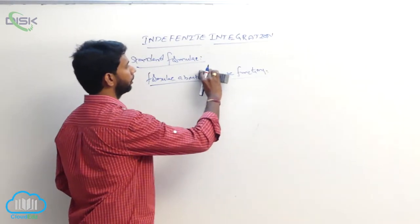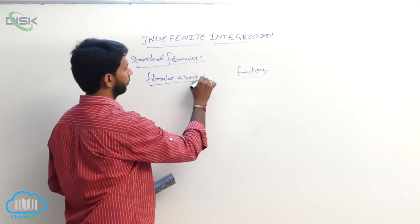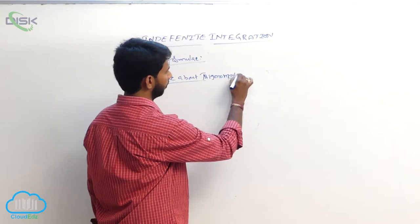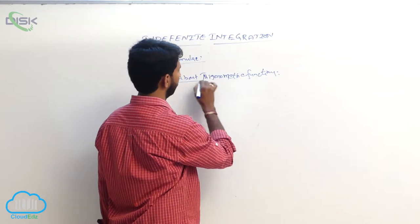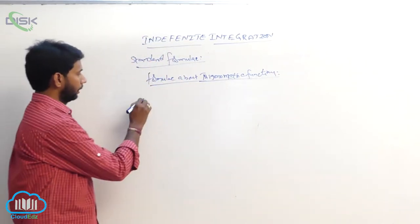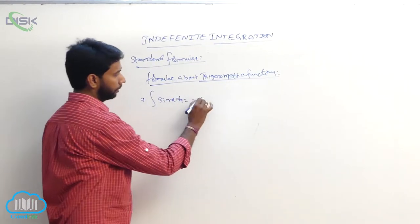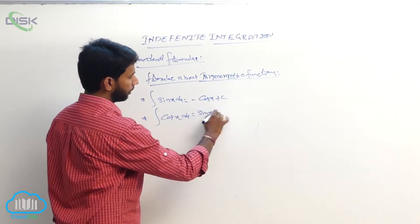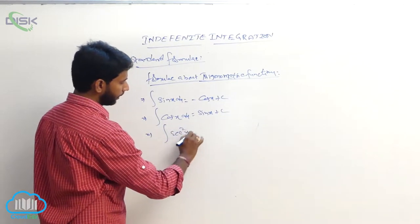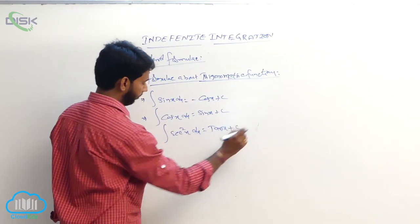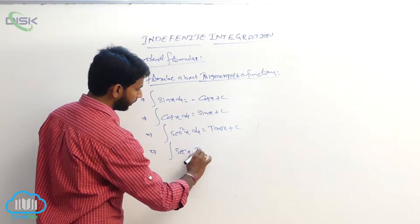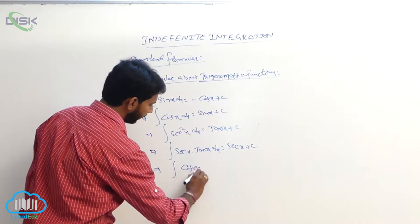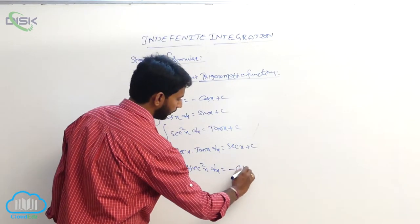Formulas about trigonometry functions: integral of sin x dx equals minus cos x plus constant. Integral of cos x dx equals sin x plus constant. Integral of sec²x dx equals tan x plus constant. Integral of sec x tan x dx equals sec x plus constant. Integral of csc²x dx equals minus cot x plus constant.